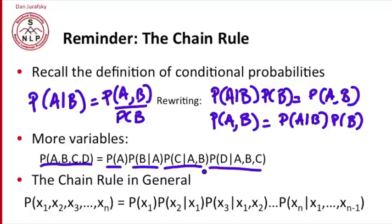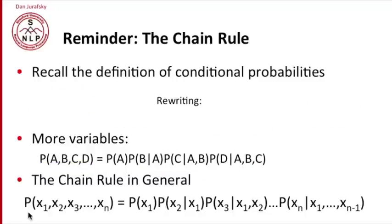And a more general form of the chain rule we have here. The probability of any joint probability of any sequence of variables is the first times the conditional of the second on the first times the third conditioned on the first two, up until the last conditioned on the first n minus one. The chain rule.